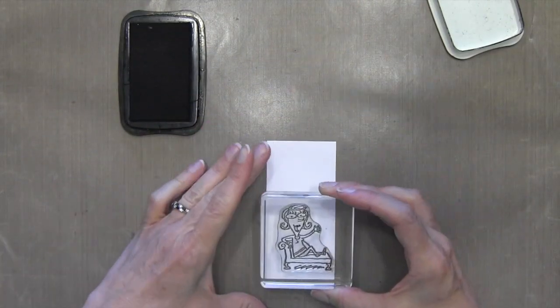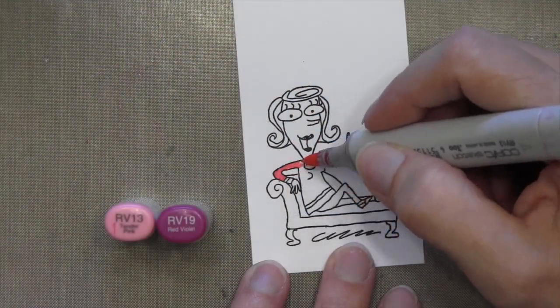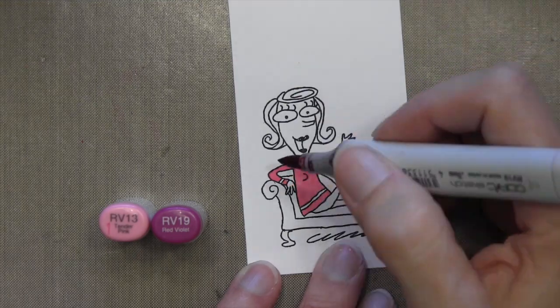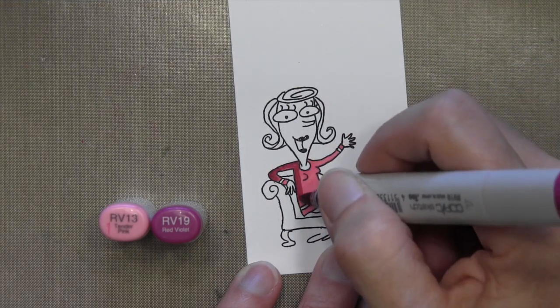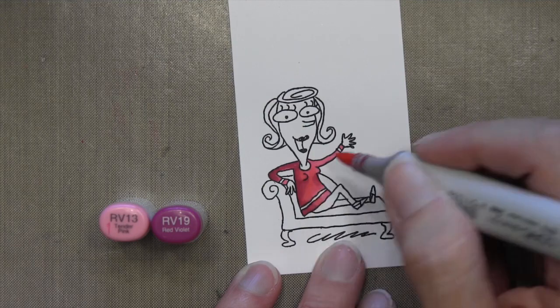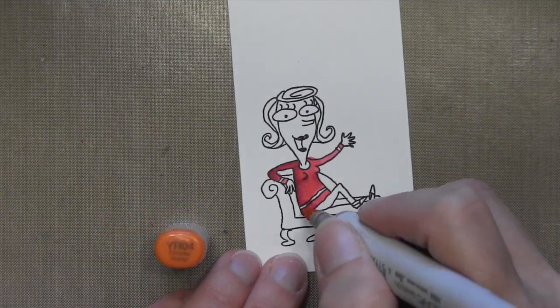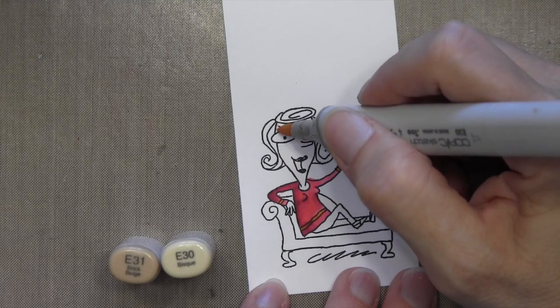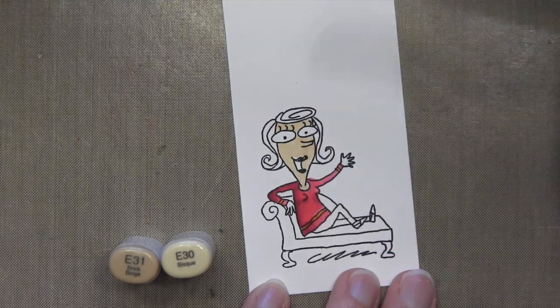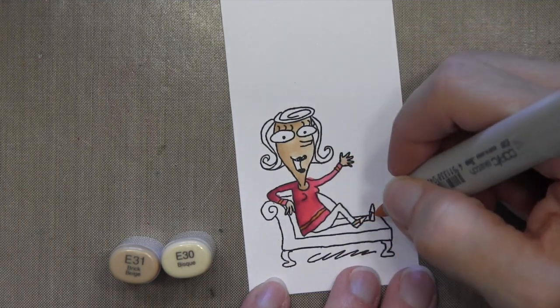The first thing I'm going to do is stamp my girl at the bottom of this piece of Neenah Solar White cardstock with some Memento Tuxedo Black ink. And I think this piece is about two inches wide and four and a quarter inches high. And I'm going to be coloring her with Copics. I'm going to speed through a lot of these steps. This card has quite a few steps in it, so I'm going to kind of whiz through a few of them, especially where it's repetitive like coloring.